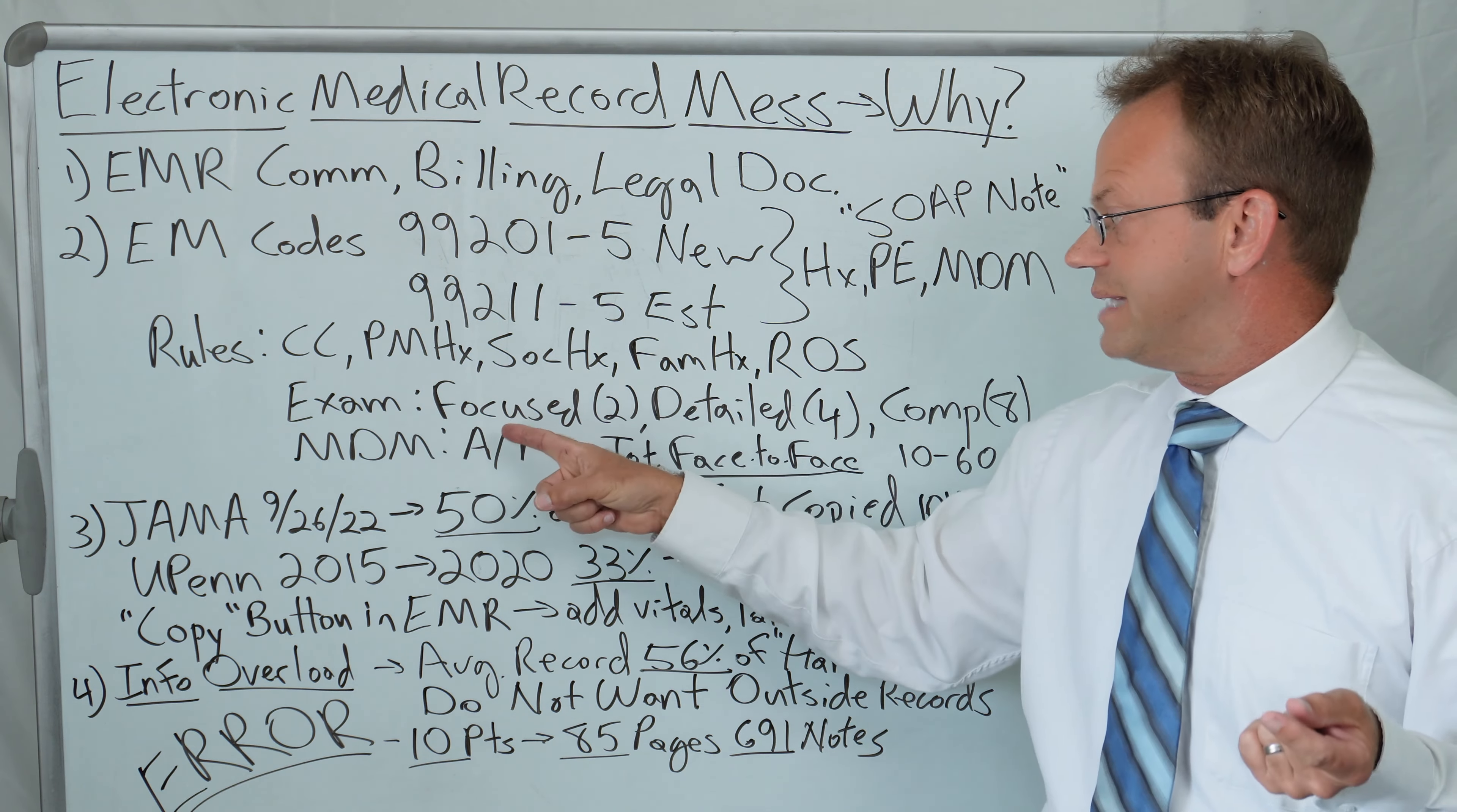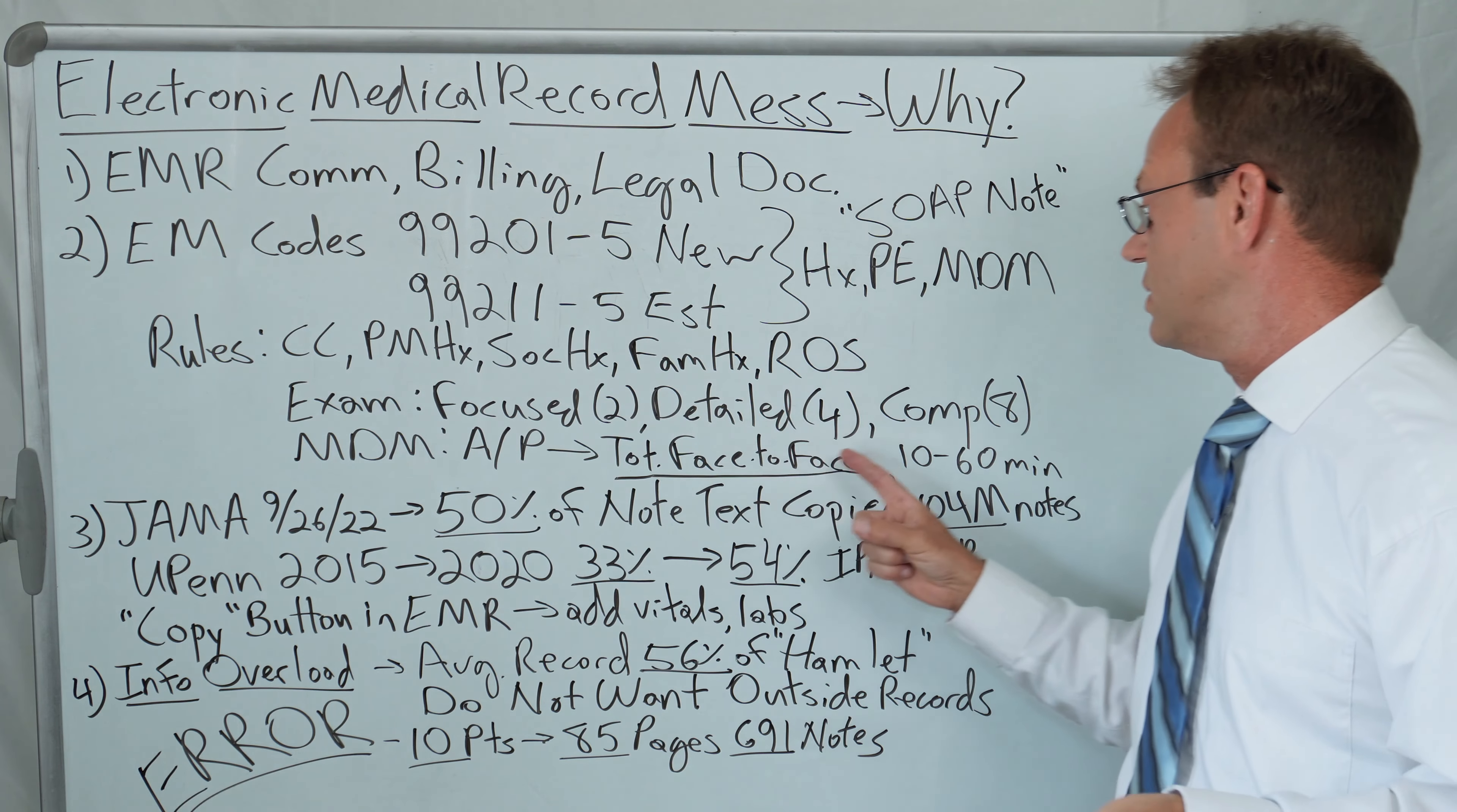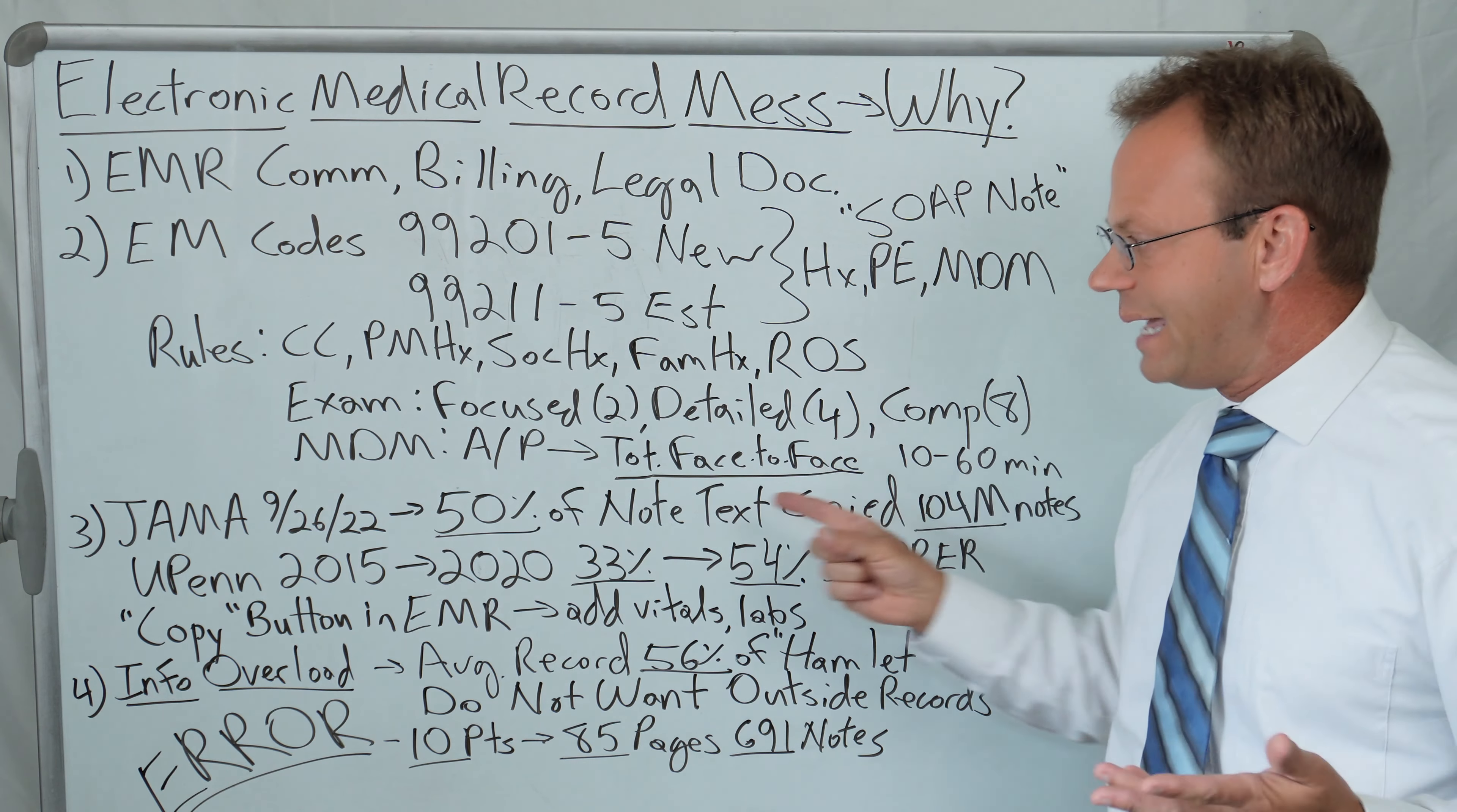The exam, there's different levels. It can either be focused, detailed, or comprehensive. A focused exam only examines two parts of the body or two organ systems. A detailed exam examines four parts of the body or four organ systems. And a comprehensive exam examines eight parts of the body or eight organ systems. You can only bill certain levels of complexity based upon if you did a focused, detailed, or comprehensive exam.